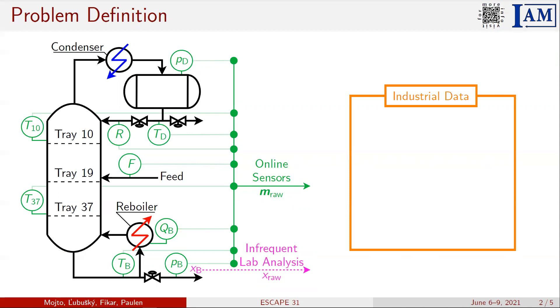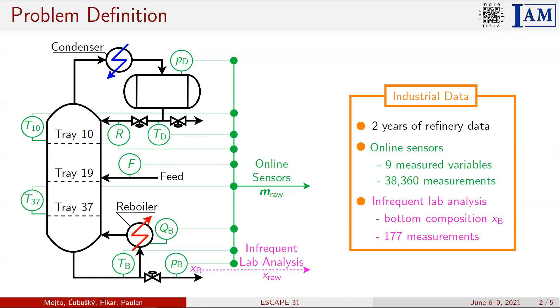In our research, we consider the real data from two years of plant production. Overall, we possess the data from nine online sensors involving more than 38,000 measurements. The bottom product composition is measured approximately two times per week, and therefore we possess only 177 measurements of this variable.